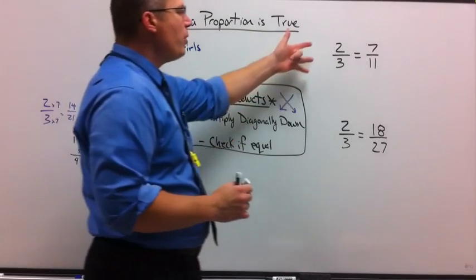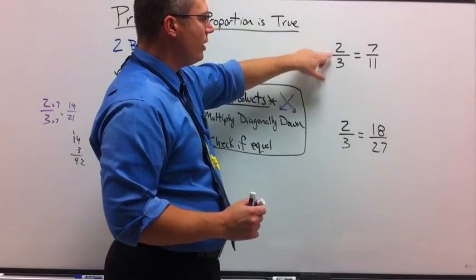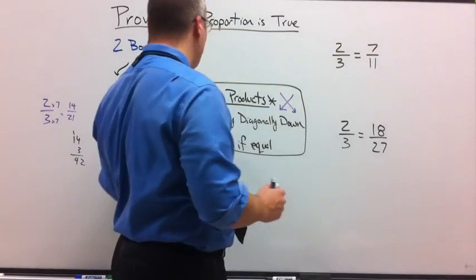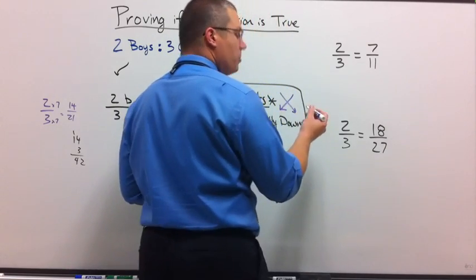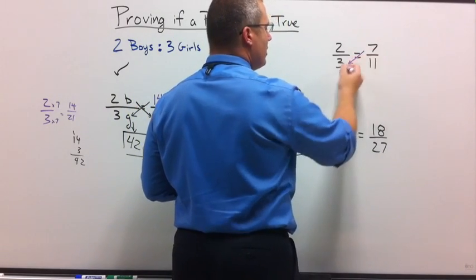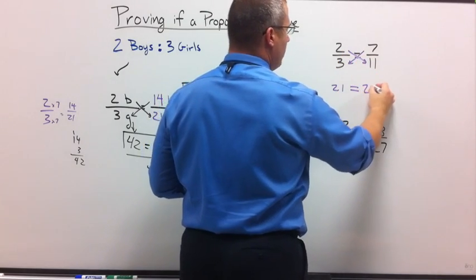Let's take a look if these ratios are equal. I have 2 to 3, boys to girls. I'm going to take out the labels because we've worked with it. We know what they are. So let's check. Let's multiply diagonally using cross products. 7 times 3 is 21. 2 times 11 is 22.